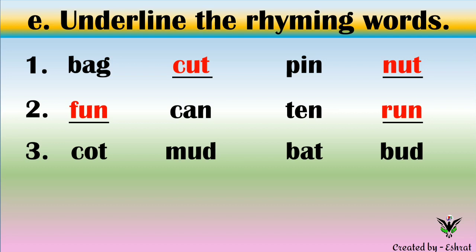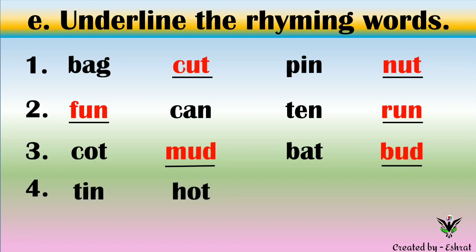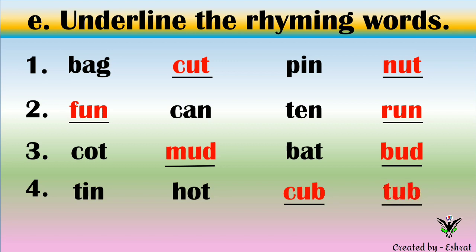Which two words rhyme? Mud and bud. Mud, bud. T-I-N, tin. H-O-T, hot. C-U-B, cub. T-U-B, tub. Which two words rhyme? Cub and tub — cub, tub.